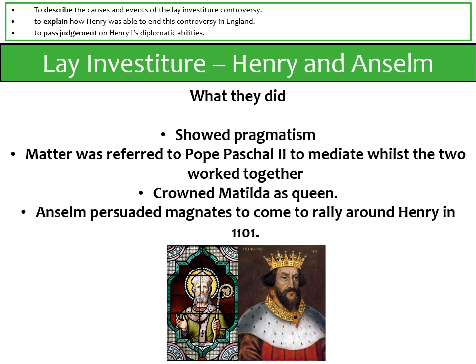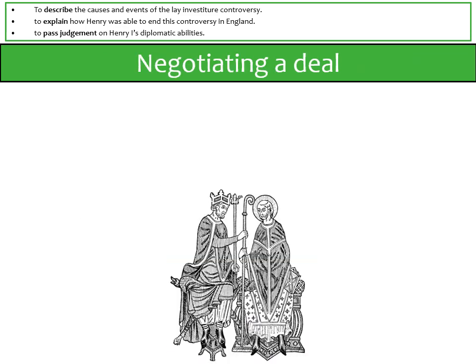In the meantime, while Pope Paschal II is mediating, Matilda is crowned as queen by Archbishop Anselm, and Anselm persuades magnates to rally around Henry in 1101. The issue isn't completely finished, though — it will continue for the next six years, which we can characterize as negotiating a deal between the church and Henry. A compromise is eventually reached, allowing Henry to survive with the support of the church and secure the legacy recorded by the chroniclers of the time.